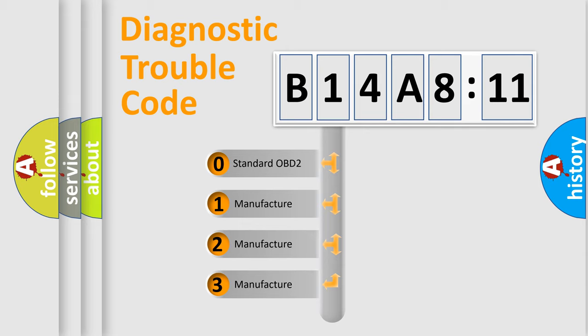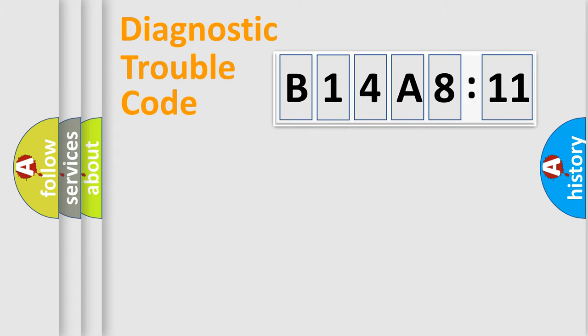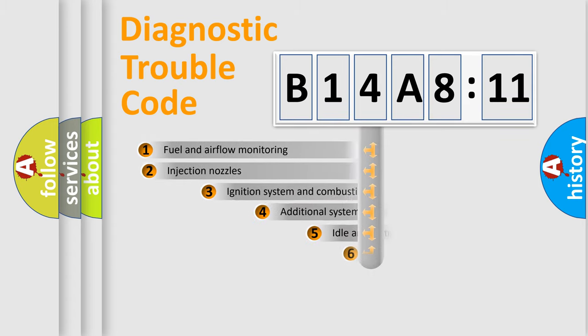If the second character is expressed as zero, it is a standardized error. In the case of numbers 1, 2, or 3, it is a more specific expression of the car-specific error.